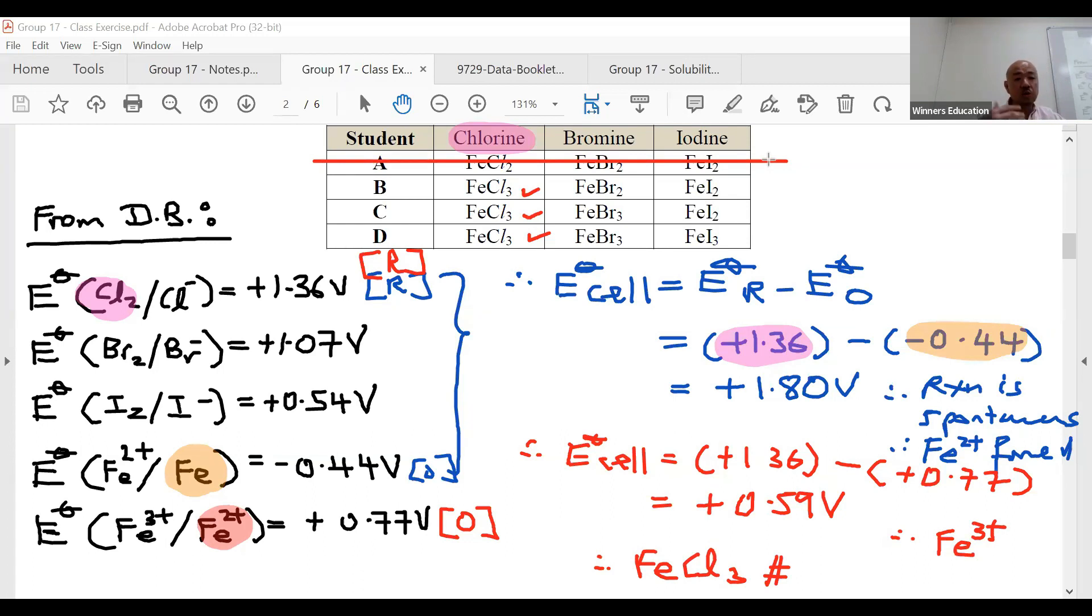You do likewise for bromine and iodine. Answer is option C. Congratulations for those that managed to do so. Please get your hands dirty—answer is option C. Go and take a look at bromine and iodine, you'll get the answer with the same treatment. In this world there is no such thing as FeBr₂—there's only FeBr₃ if you really consider it nicely, spontaneity-wise.